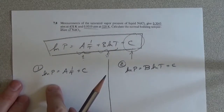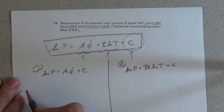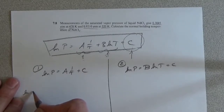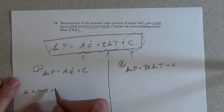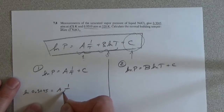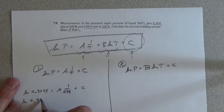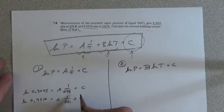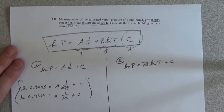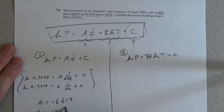For the first approach, natural log of 0.3045 equals A(1/478) plus C, and natural log of 0.9310 equals A(1/520) plus C. Solving these two equations gives A equal to minus 6614 and C equal to 12.648.